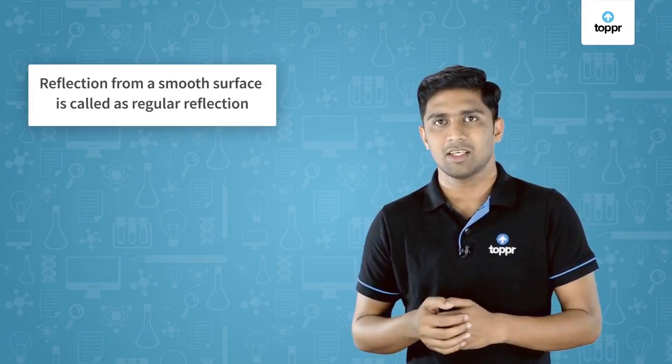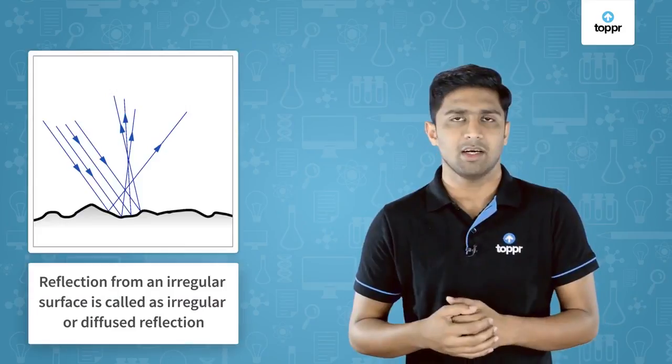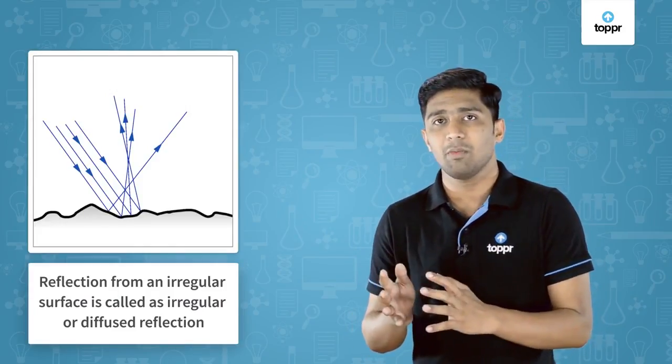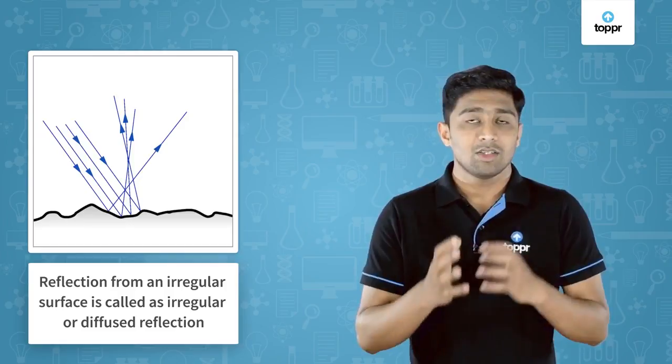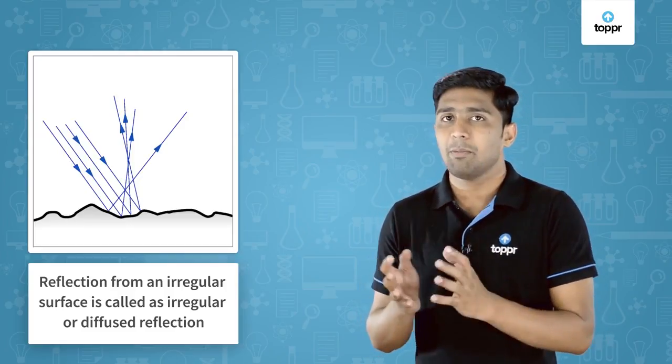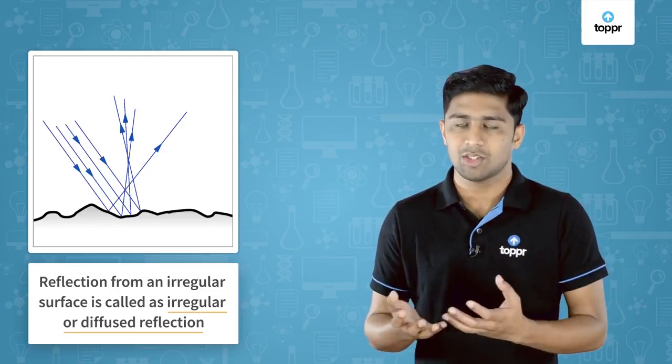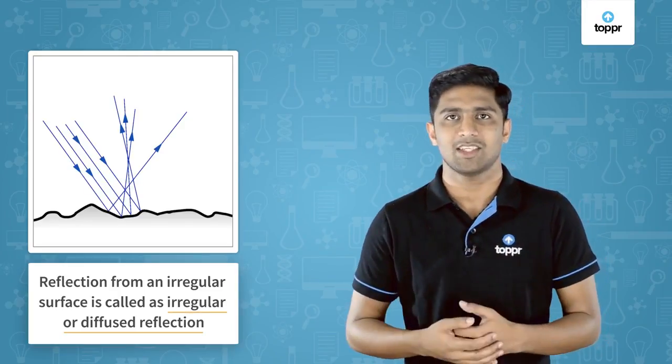Till now we have seen reflections which happen on a smooth surface. Such reflections which happen on a smooth surface are called regular reflections. But take an example of a broken mirror — the image or the reflection over there will be irregular. Such reflections which happen on an irregular surface are called irregular reflection or diffused reflection.